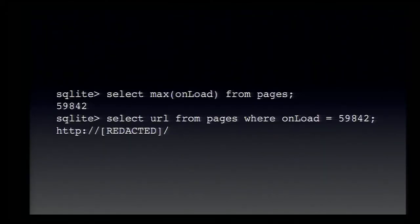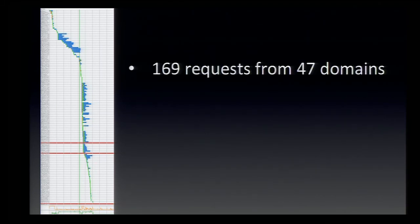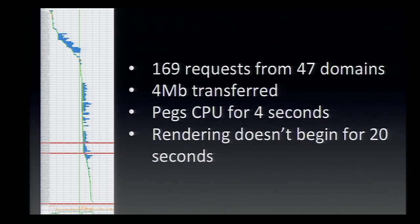If we dig up the slowest URL out of all 16,000 and pop it into WebPageTest, we find that the slowest page is just badly broken. It makes 169 requests, and images are downloaded from 47 separate domains. When the page finally timed out after 60 seconds, it had transferred four megabytes of data. The page pegs the CPU for four seconds at the start, and rendering doesn't even begin for 20 seconds — you're looking at a blank screen for 20 seconds. And what if we look at the other extreme — the fastest webpage? At 186 milliseconds, this must be a super-optimized page. Or not.